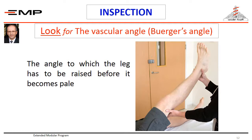Please note that raising the limb should be done slowly to allow for observation of the pallor. In an ischemic limb, elevation to 15 to 30 degrees for 30 to 60 seconds may cause pallor. A vascular angle of less than 20 degrees indicates severe ischemia. This test will be demonstrated in your ward session.